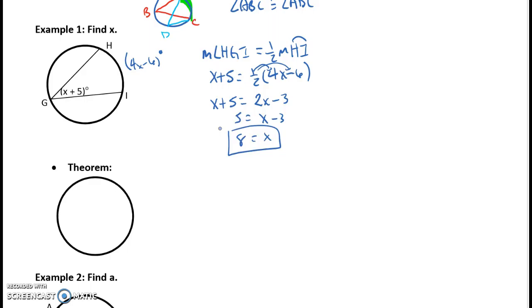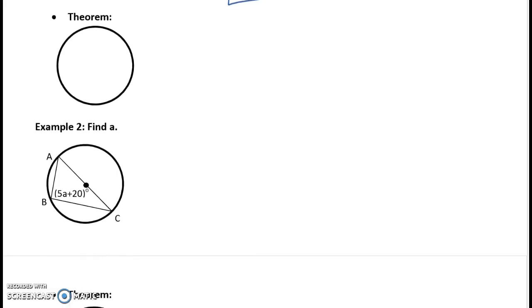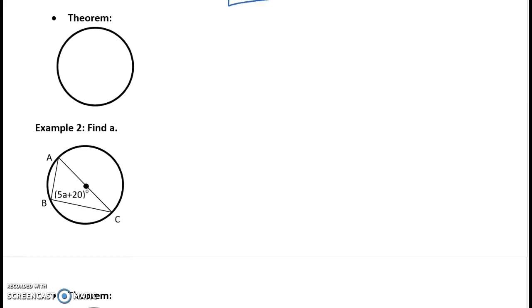Let's go ahead and move on to the next theorem, which relates to, again, inscribed angles, but one inscribed angle in particular. So we're going to look at what happens when we go through a diameter. And you may actually be able to think about this. So let's say we have a center A here. And we create an inscribed angle that happens to have endpoints on the diameter. So let's call that XYZ.